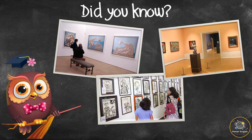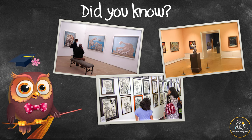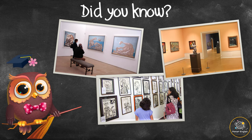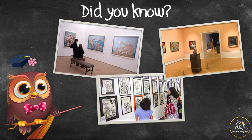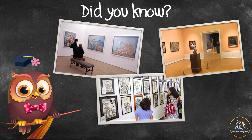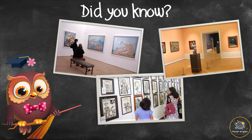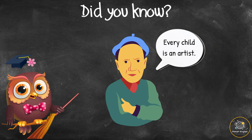Picasso was a very fast painter and on some days he could finish three paintings. It is believed that he produced about 13,500 paintings and 100,000 prints during his lifetime. No other artist has produced as many paintings as Picasso. Picasso once said, "Every child is an artist."